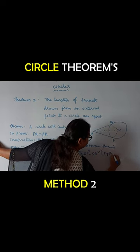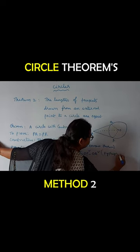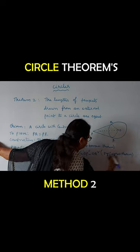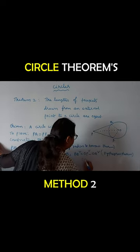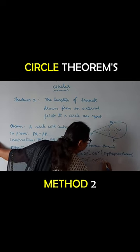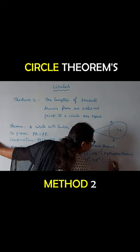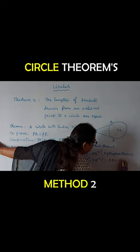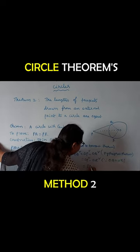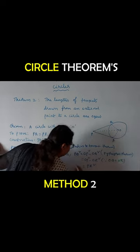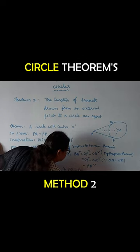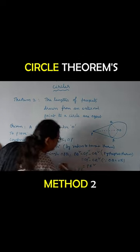By Pythagoras' Theorem, that is equal to OP squared minus OR squared, since OQ is equal to OR. That is equal to PR squared. Therefore, PQ is equal to PR.